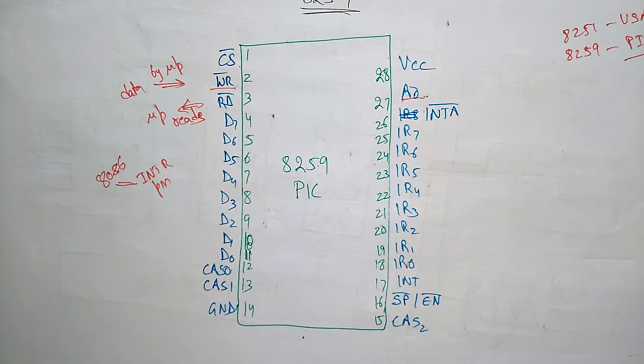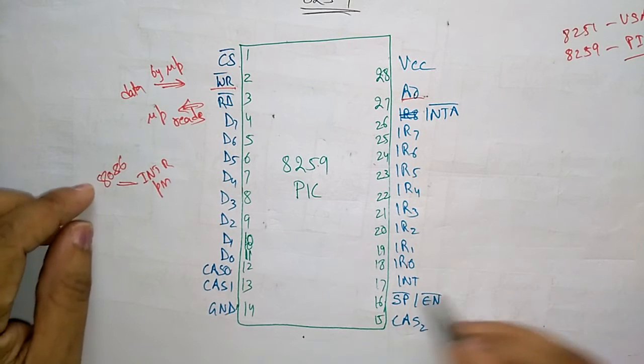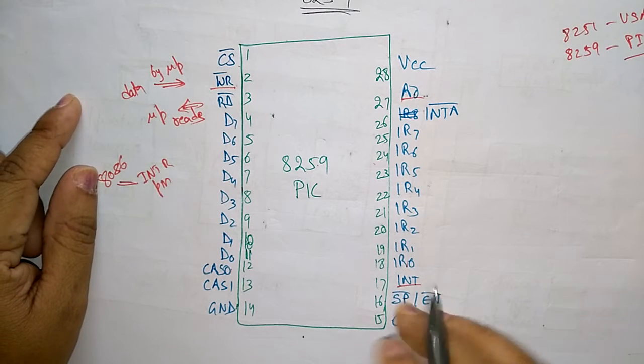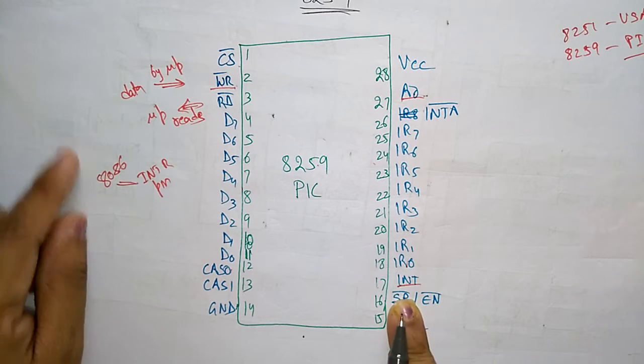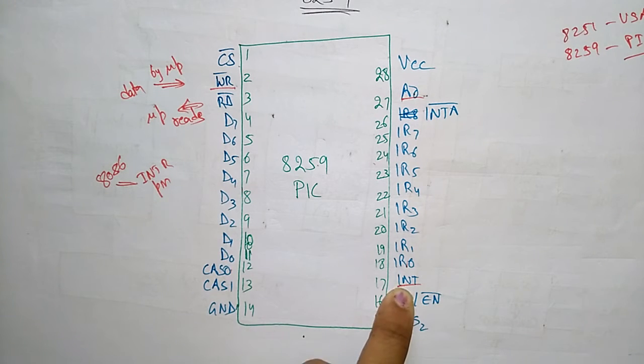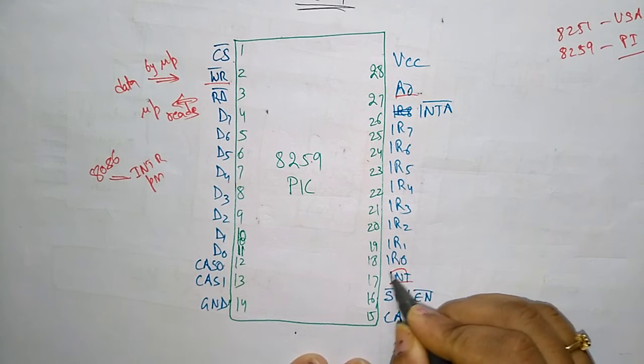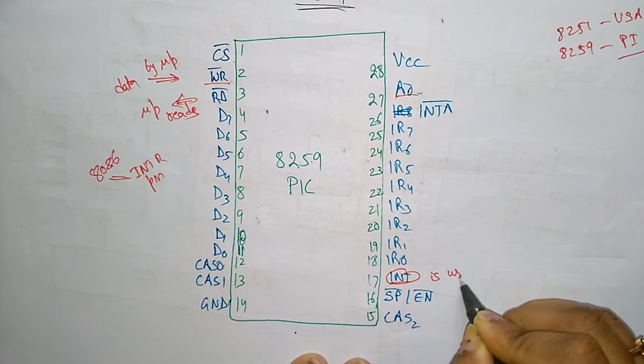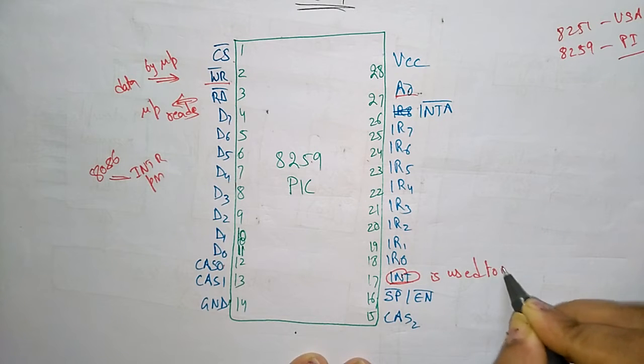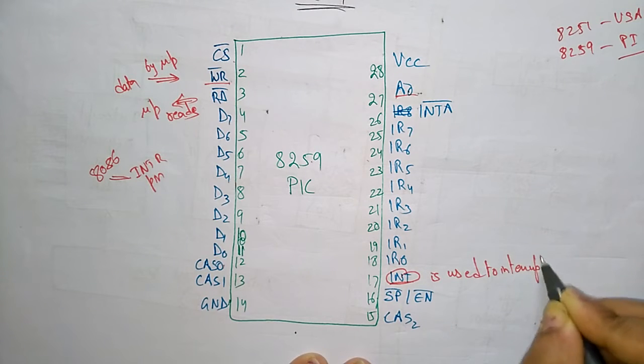These are the pins. Next is INT. Now coming to the INT pin. What is the use of INT pin? This signal is asserted, this interrupt signal is asserted whenever a valid interrupt request is received by 8259. It is used to interrupt the microprocessor. The main purpose of this INT is to interrupt the microprocessor.